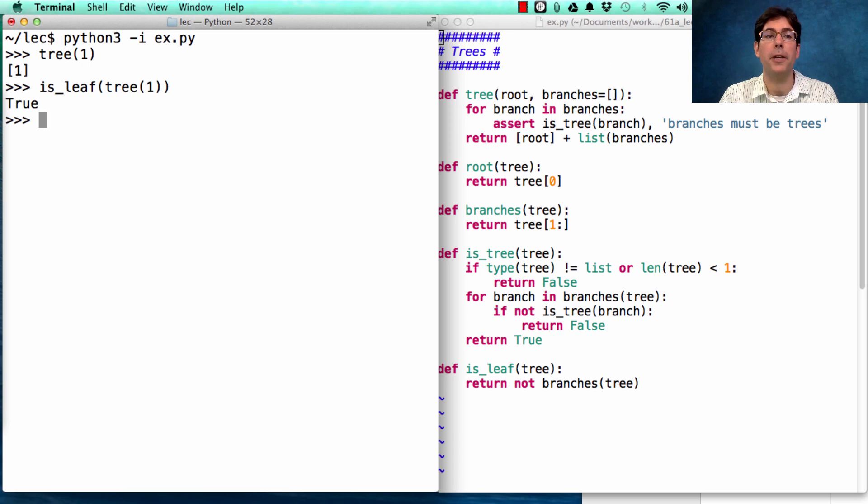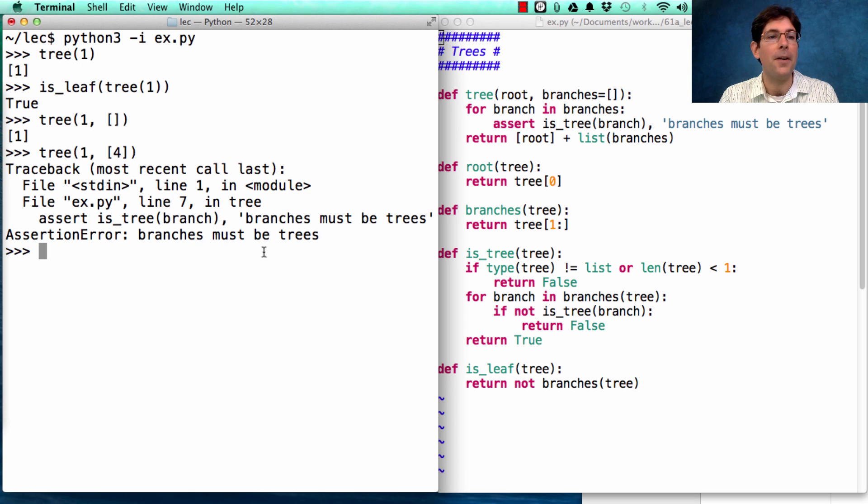Now, let's say I want to create a larger tree. I create a tree by passing in a root value and then a list of branches. Now, that list could be empty, giving me a leaf. Or, it could contain other trees. If I put anything in there besides a tree, such as the number 4, I'll get an error. Branches must be trees.